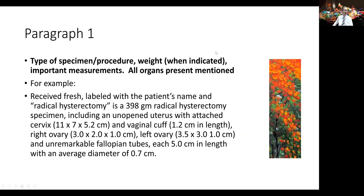So, I said four-paragraph format. What are they? Paragraph one is essentially an overview. It documents the type of specimen, probably the type of procedure that it came from, weight when indicated, and important measurements, overall size, and what organs are present should be mentioned. For example: received fresh, labeled with the patient's name and identifier, and this procedure type — radical hysterectomy. A 398 gram radical hysterectomy specimen, including an unopened uterus with attached cervix, 11 by 7 by 5.2 centimeters. Vaginal cuff, 1.2 centimeters in length. Right ovary, 3 by 2 by 1 centimeter. Left ovary, 3.5 by 3 by 1 cm. And unremarkable fallopian tubes, each 5 centimeters in length with an average diameter of 0.7 cm. Everything that's going to be examined is listed in that first paragraph, along with the type of procedure, overall sizes and dimensions that will be important.